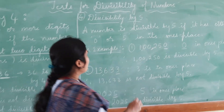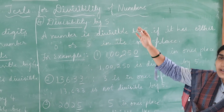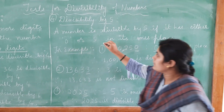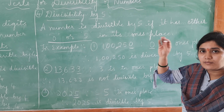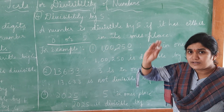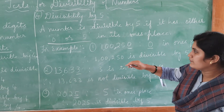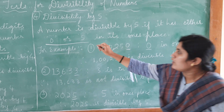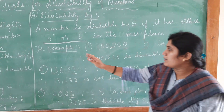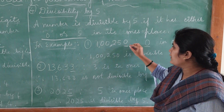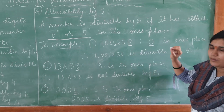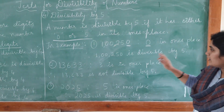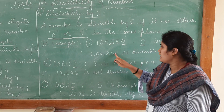Now let us move on to divisibility by 5. We can check whether the given number is divisible by 5 or not. A number is divisible by 5 if it has either 0 or 5 in its ones place. For example, 1,250 — the ones place is 0. Since we have 0 in the ones place, according to the given rule, the number 1,250 is divisible by 5.